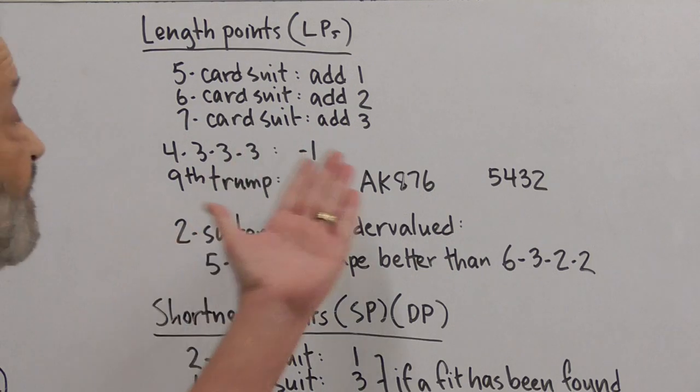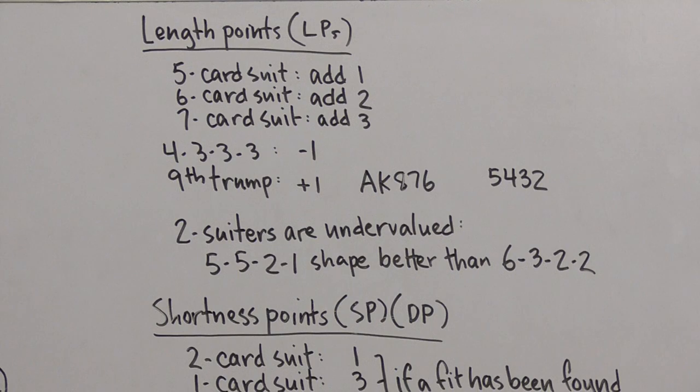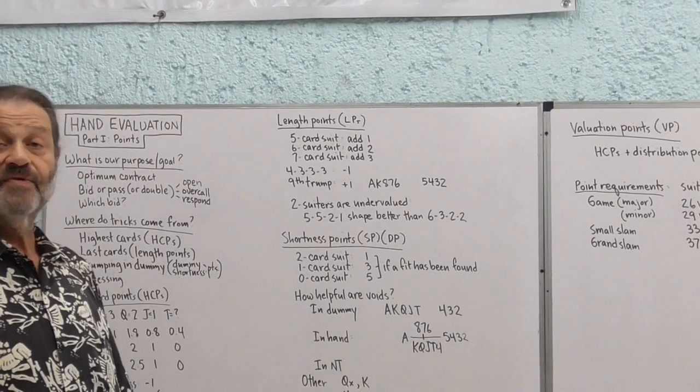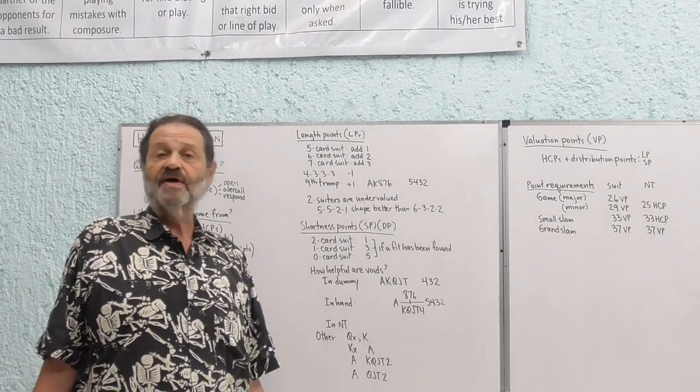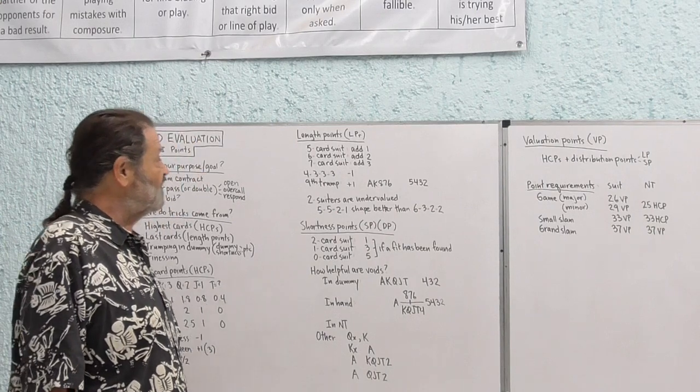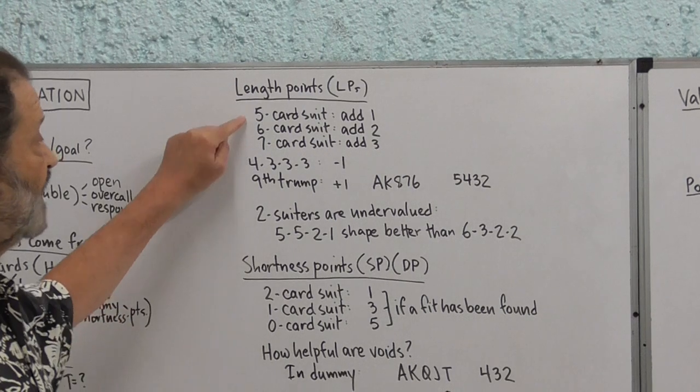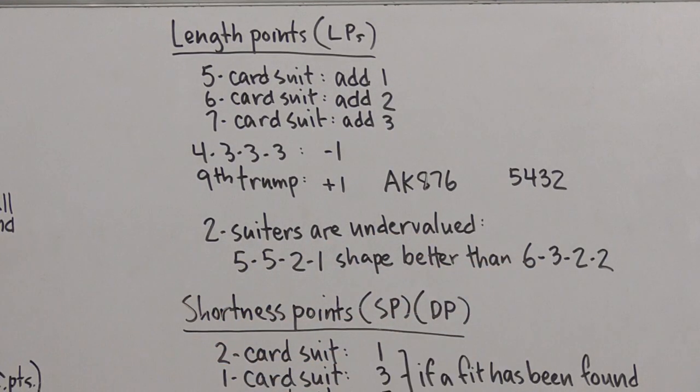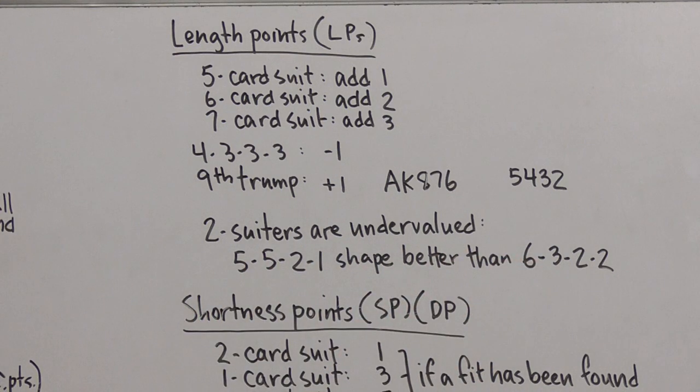We're also going to give ourselves an extra point for the ninth trump. And one more for each one thereafter. So if we have a five-four fit like this, partner's opened a heart with this suit, and you have four of them, give yourself an extra point for that ninth trump. The reason for that is that a lot of things become possible when you have a nine-card trump suit that aren't as easy or aren't possible at all with an eight-card trump suit. And one last thing to say about this idea. Two suiters are undervalued in this system here. A five-five-two-one hand has better shape than a six-three-two-two. So this is one place where the point count system might not accurately reflect the relative strength of hands.